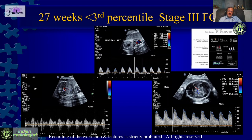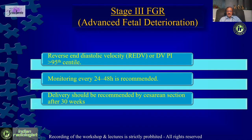Third example: 26-week fetus with weight less than the 3rd percentile — straightaway FGR. Staging with Doppler shows reversal of flow in diastole in the umbilical artery, and the A-wave in the ductus venosus touching the baseline but not going on the other side, along with very high diastolic flow and a fall in MCA PI — this is Stage 3 FGR. In Stage 3 FGR, we monitor every 24 to 48 hours. We should deliver if the fetus has reached 30 weeks of gestation with these findings. The fetus may not tolerate the stress of labor, so a C-section is recommended.